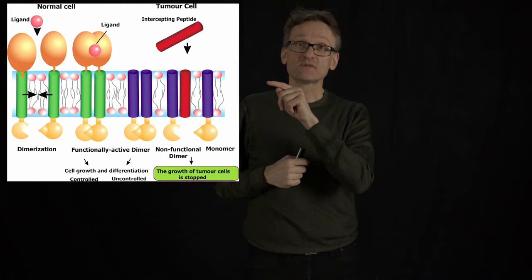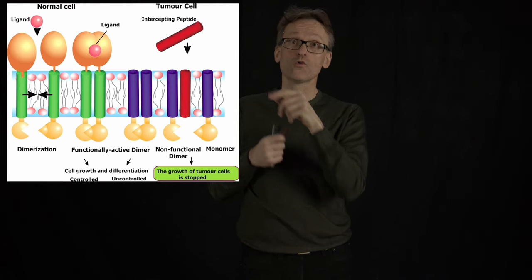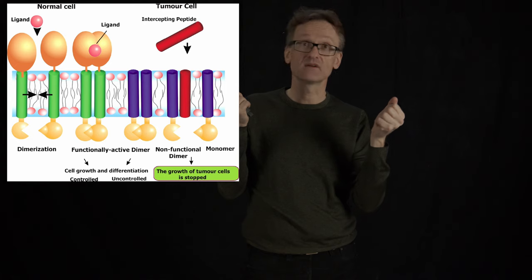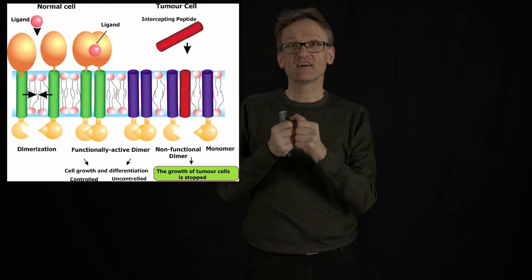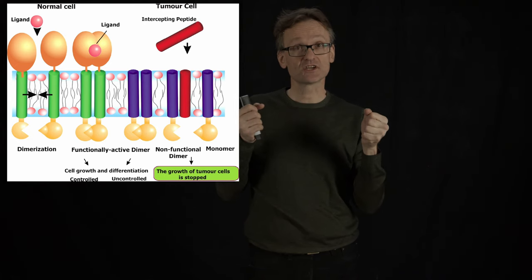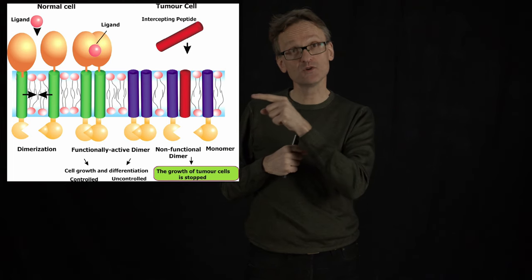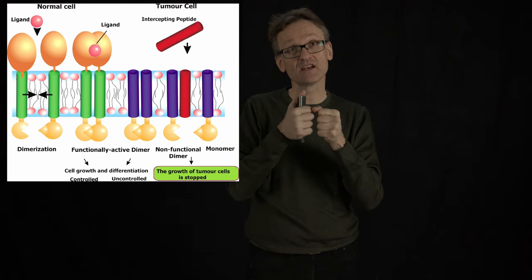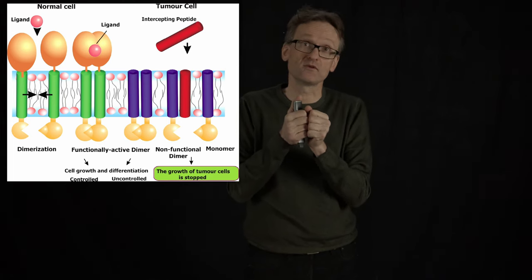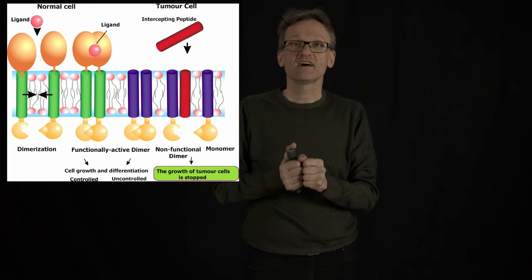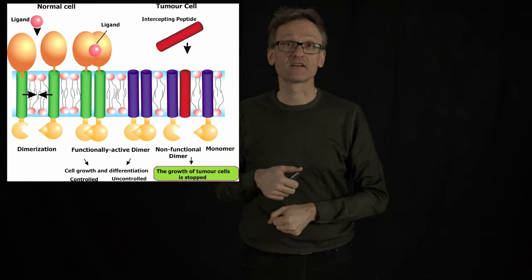Then what happens is that the extracellular part here should let go or at least dissociate, leave each other again and then the green helices should leave each other. But if there is now a mutant in the blue helices here, the blue helices will keep sticking together or maybe not stick together at all from the start and that is going to lead to errors on the signaling on the inside.